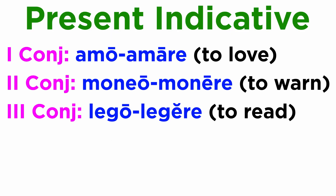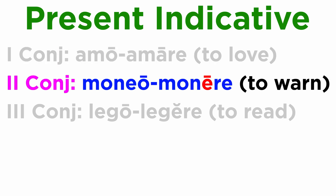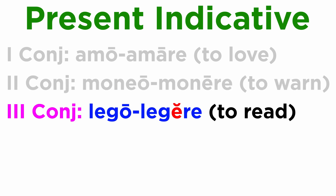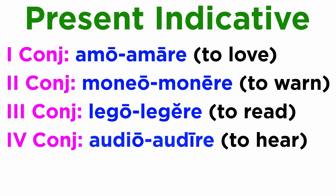We have seen in previous tutorials how the present indicative is formed. Each conjugation has its own specific endings. In the first conjugation, as with amo, amare, the thematic vowel is an A. In the second conjugation, as with moneo, monere, it's an E. But the third conjugation, as with lego, legere, because of a short E, the vowel modified into an I. Let's review the third conjugation while also introducing the fourth conjugation.